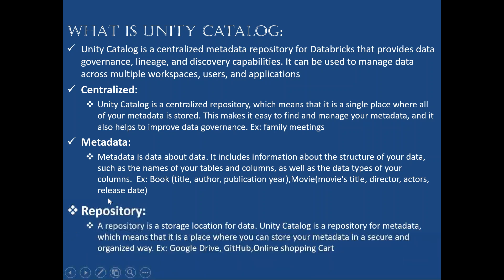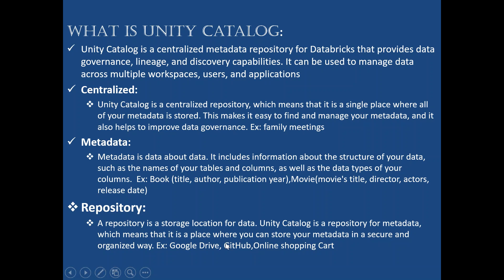A repository is a storage location for data. Unity Catalog is a repository for metadata, meaning it is a place where you can store your data in a secure and organized way — similar to Google Drive or an online shopping cart where you store files. Combining these: centralized means at one place, metadata means data about data, repository means storage location — so Unity Catalog stores all metadata at one place.